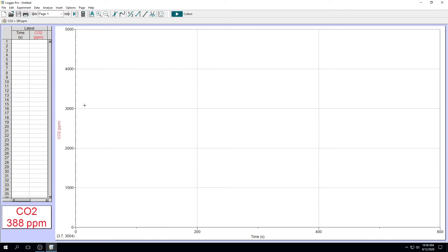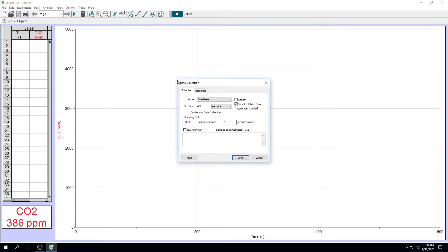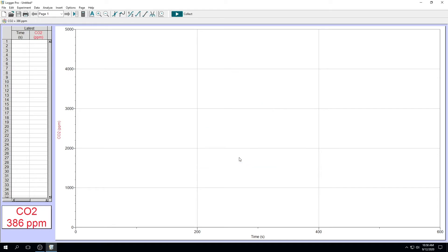Now set up your data collection. Click on the data collection icon and you want to set your duration to 4 minutes. You want to set the sampling rate to 15 samples per minute and click done.